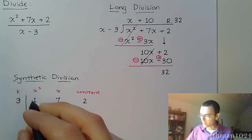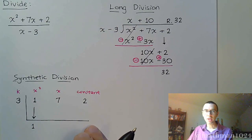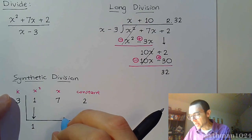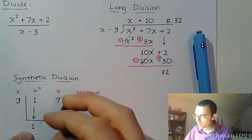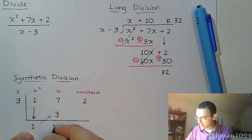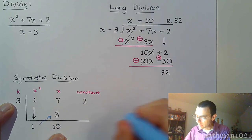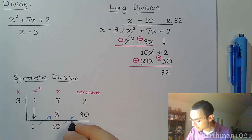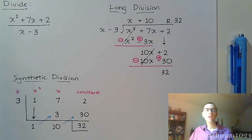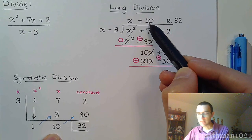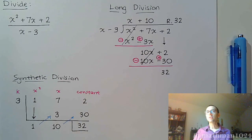The bottom row is where we give the coefficients for our answer. Once you've got the 1 brought down, it's just a matter of multiplying and adding. Take K times this value: 3 times 1 gives 3. Now add: 7 plus 3 gives 10. Multiply again: 3 times 10 is 30. Add 2 and 30 and we get 32. Notice the similarity with the long division result — there's the 1, the 10, and the remainder 32. Same thing as long division but more condensed and efficient.